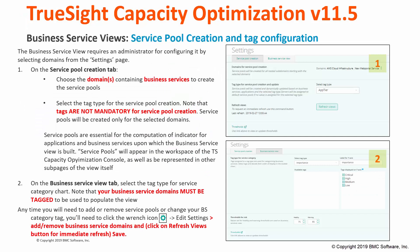The Business Service View requires administrator privileges for configuring the view itself by selecting Domains from the Settings page. On the Service Pool Creation tab within the Settings page, choose the domains containing Business Services to create the Service Pools. Select Tag Types for the Service Pool Creations — please note that tags are not mandatory for Service Pool creation. Service Pools will be created only for selected domains, and are essential for the computation of an indicator for application and business services upon which the Business Service View is built.